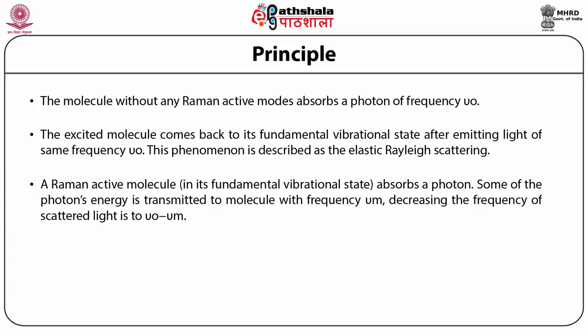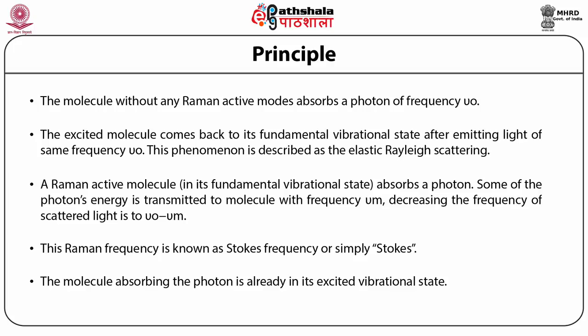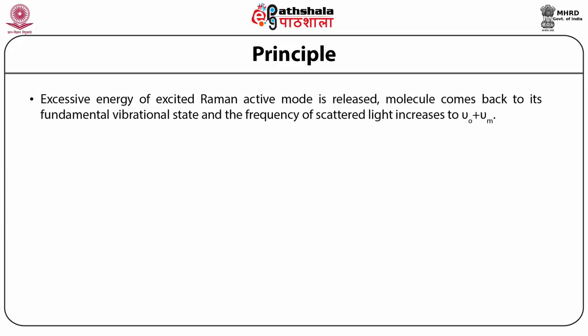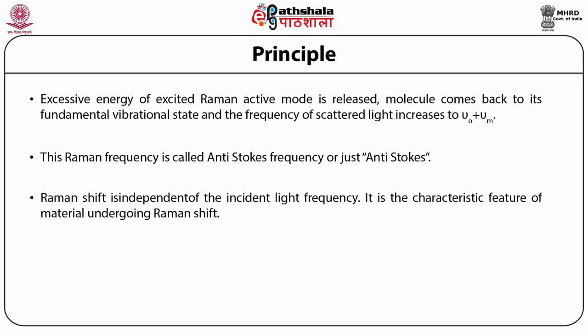The decreased scattered light frequency is nu not minus nu m, known as Stokes frequency or simply Stokes. When the molecule absorbing the photon is already in its excited vibrational state, the excessive energy of the excited Raman active mode is released, and the molecule returns to its fundamental vibrational state. The frequency of scattered light then increases to nu not plus nu m, called anti-Stokes frequency. Raman shift is independent of the incident light frequency and is a characteristic feature of the material. The shift delta nu is positive for Stokes and negative for anti-Stokes.